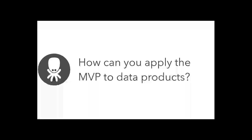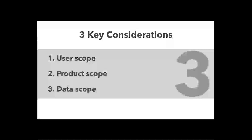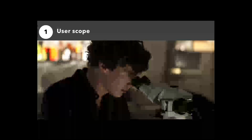Now we're going to get into how you can actually apply this process to data products or embedded analytics. For us, there are three key considerations. The first one is user scope — going with the agile development methodology, it's always start with your user. Then we'll go to how do you align that with your product, and then what data do you need to support it. As far as user scope, this is the whole starting point. You can't really know what you need to build or what data you need if you don't know who you're talking about.